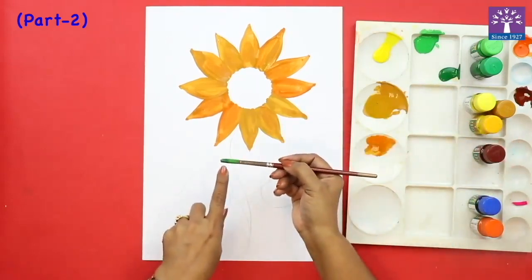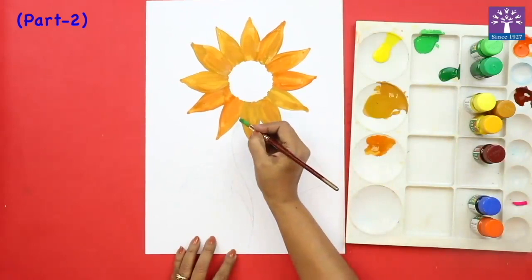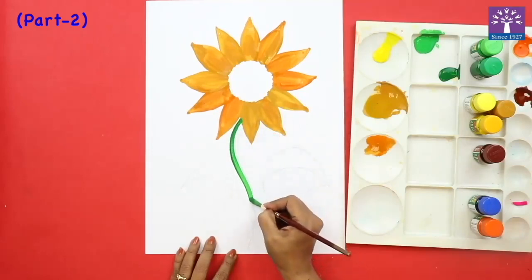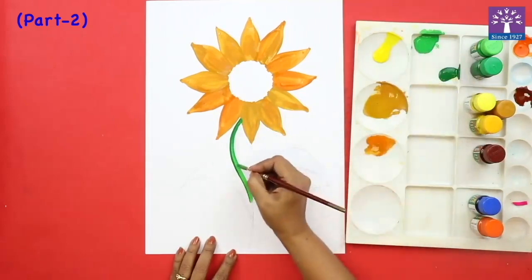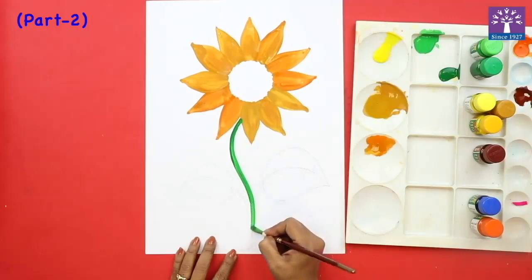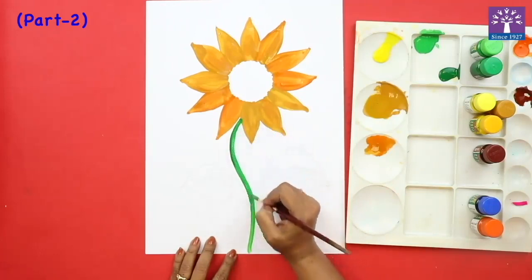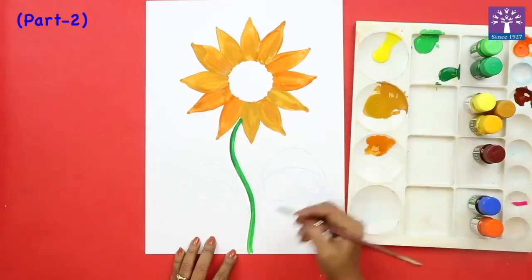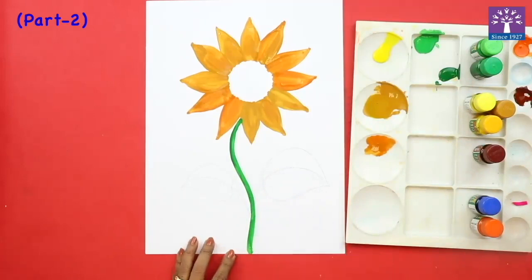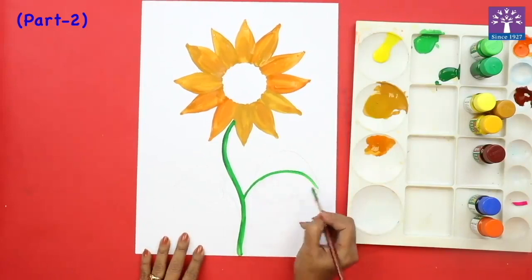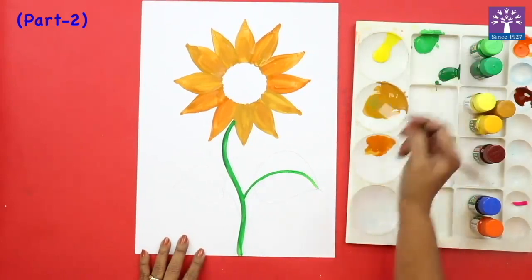So if you can see, there are two colors: dark green and light green. Very slowly I am going to trace over the curved line or the stem that I have drawn.